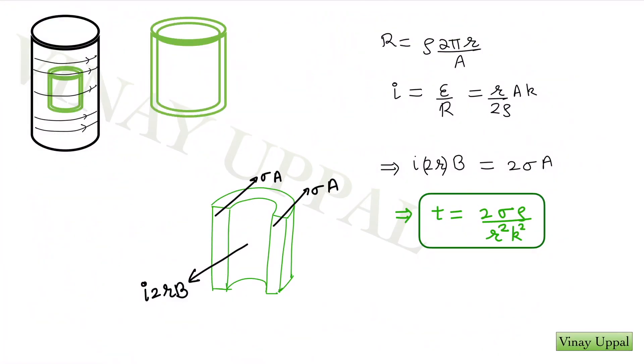So here I have drawn the solenoid. This black figure is my long solenoid which will produce a uniform magnetic field, which was given in the question as kt. This green cylinder is my can, which I can treat it as a thin cylindrical shell. So because magnetic field is varying with time, there will be an induced emf generated in the can. So let's first calculate that induced emf.